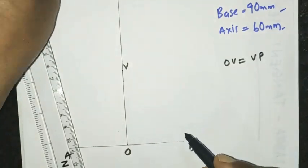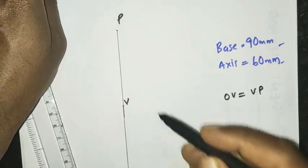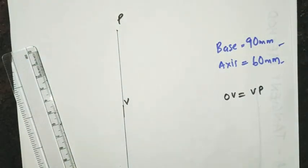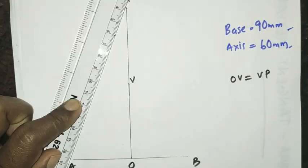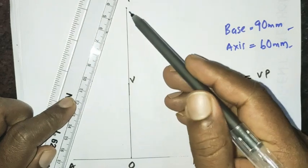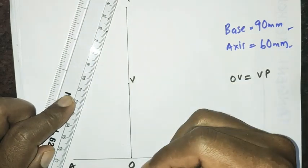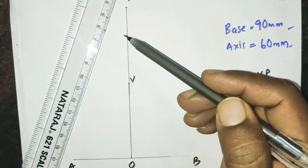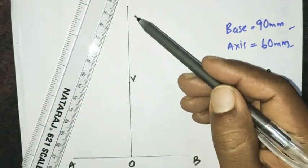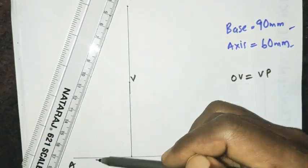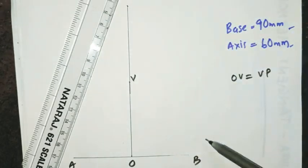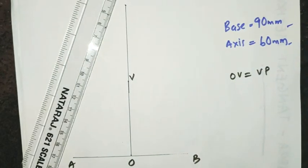V is equal to √3A. Here, P, A, M join together. P, A, M join together. And P, B, M join together.